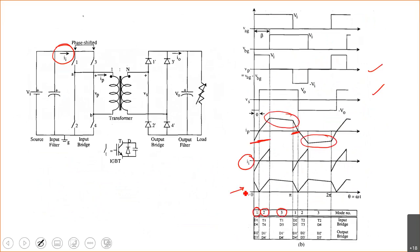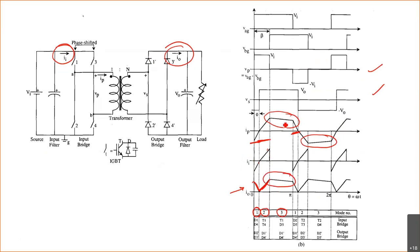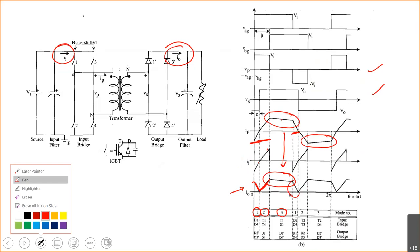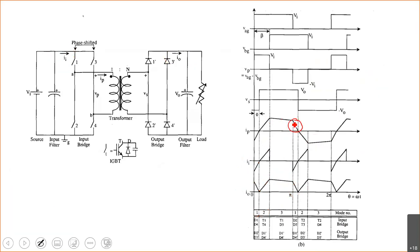On the output side, the current after the diode bridge rectifier is always unidirectional. The primary current waveform, after passing through the diode bridge rectifier, gives the output current I0. This waveform is replicated on the DC side — similar to how a square wave on the AC side gives a constant I0 on the DC side.